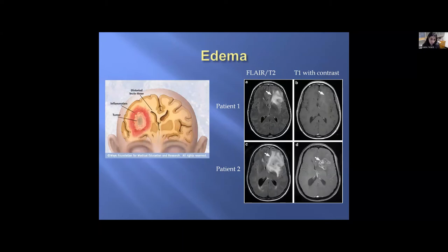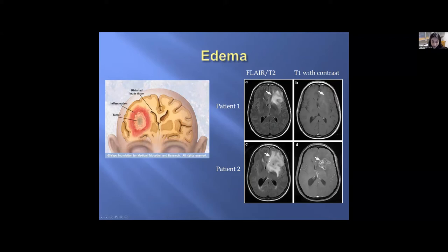What is edema? Often accompanying these tumors is swelling, edema, or inflammation, typically visible on a T2 MRI sequence. Patient one shows swelling on T2 with the white representing edema, while the T1 contrast image shows almost nothing — fitting the profile of a low-grade glioma. Patient two shows more edema on T2, and the lesion becomes visible on T1 contrast, fitting the profile of a higher-grade glioma.